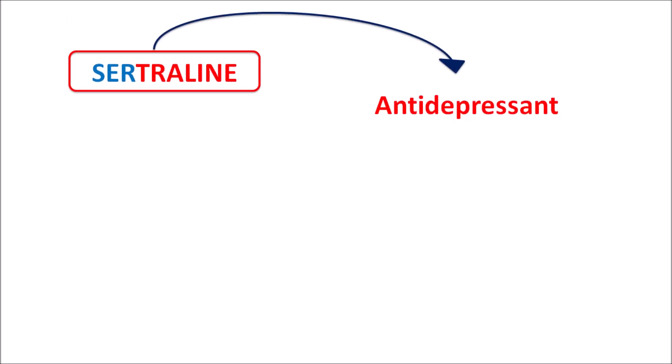In this video, let us discuss sertraline. Sertraline is an antidepressant classified as an SSRI — selective serotonin reuptake inhibitor. We have many types of drugs classified as SSRIs, and among these, sertraline is one of the well-known drugs acting as an antidepressant.